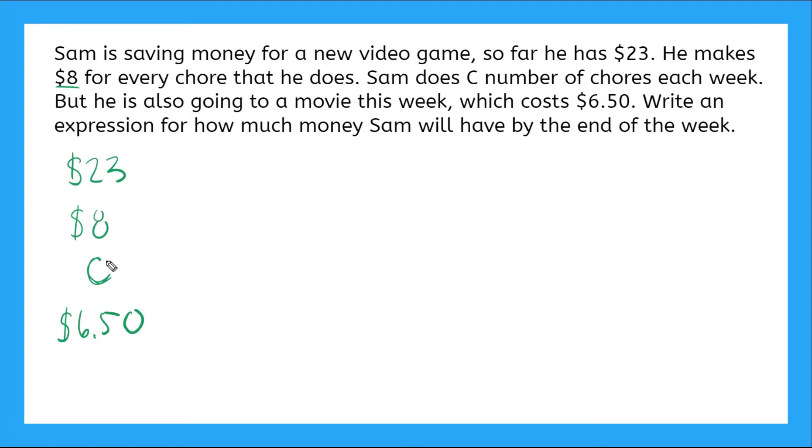Okay, so if Sam does C number of chores, what will his allowance be? What does that mean, right? If he does C number of chores and he makes $8 for every chore he does, yeah, that means it's multiplication. So we have $8 times C. Okay. And now if he goes to a movie, what happens? Yeah, he has to subtract that money, right? So minus $6.50.